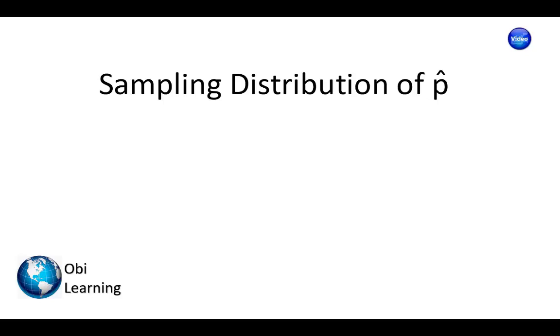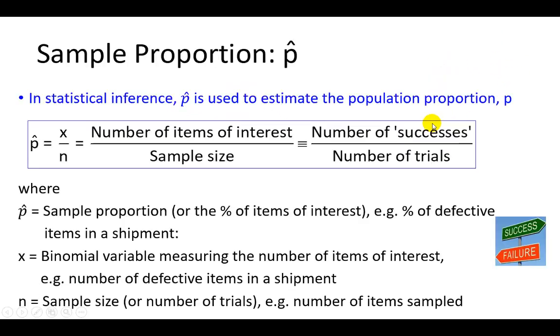In this final presentation in my sampling distribution series, I'm going to talk about the sampling distribution of the sample proportion, p hat. In statistical inference, p hat is the estimator for the population proportion p, which is basically the percentage of things of interest.